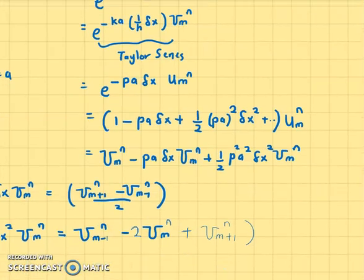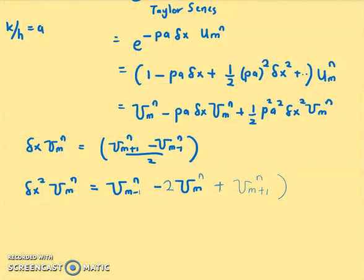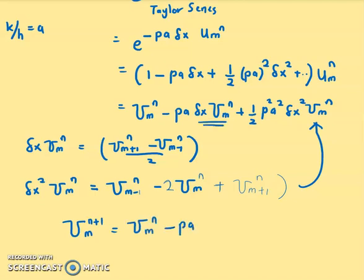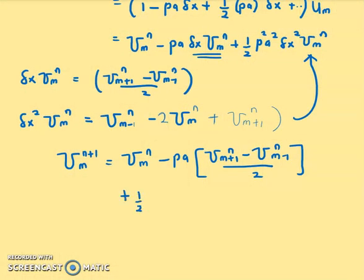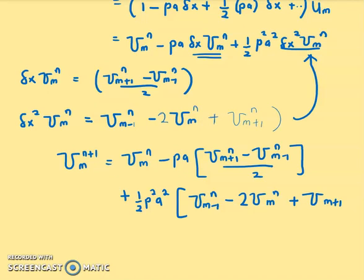So what we are going to do is substitute this value inside here. So that will give me u_m^{n+1} equals to u_m^n minus ρa times (u_{m+1}^n - u_{m-1}^n) over 2, plus half of ρ squared a squared, what is delta x squared u_m^n, which is this one, u_{m-1}^n minus 2 u_m^n plus u_{m+1}^n.